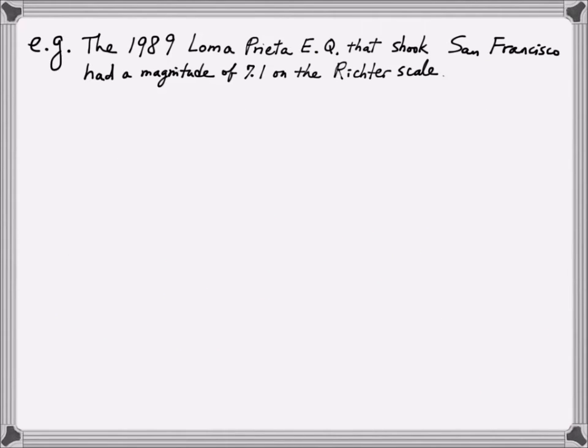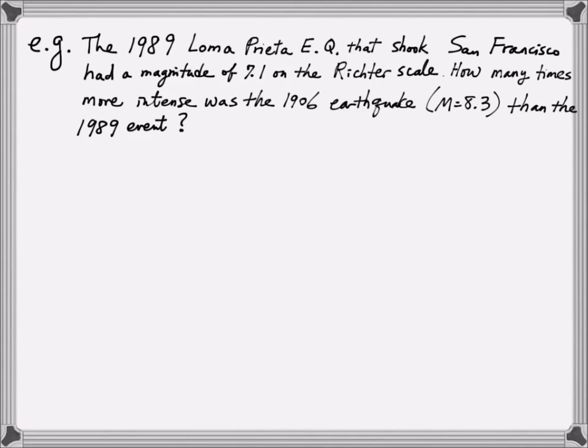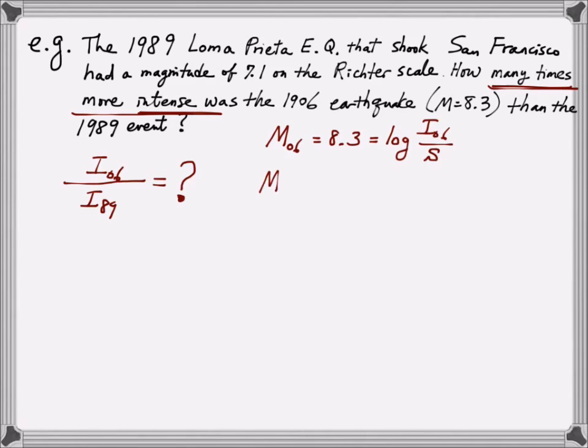Let's look at another example of the Richter scale. We know that the 1989 Loma Prieta earthquake that shook San Francisco had a magnitude of 7.1 on the Richter scale. How many times more intense was the 1906 earthquake with the magnitude of 8.3 than the 1989 event? The question is asking you to compare the intensity of the two quakes. In essence, we're looking for this quantity of the intensity of the 06 earthquake over the intensity of the 89 earthquake. We know the magnitude of the 06 event is 8.3, which by definition is equal to the log of the intensity of 06 divided by the standard quake S. The magnitude of the 89 event is 7.1, which is the log of the intensity of the 89 divided by S.